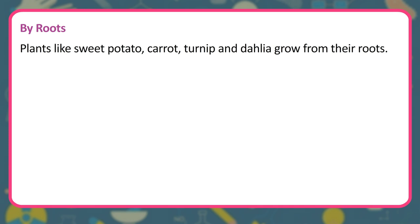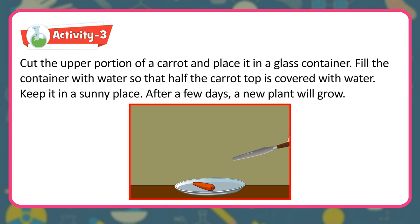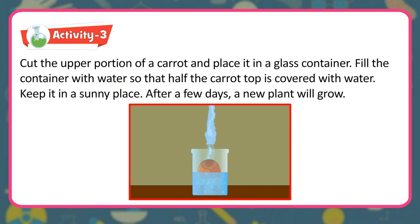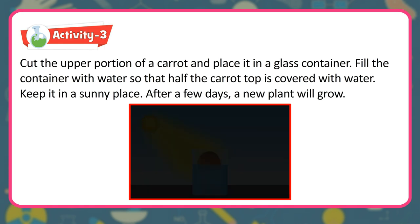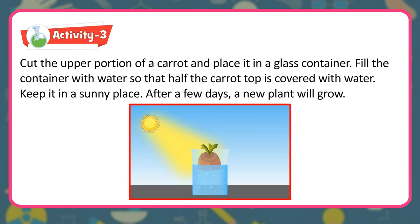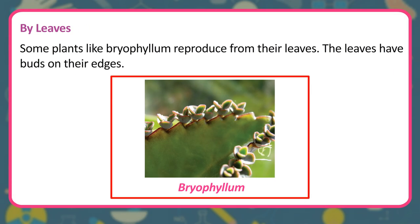By roots: Plants like sweet potato, carrot, turnip and dahlia grow from their roots. Activity: Cut the upper portion of a carrot and place it in a glass container. Fill the container with water so that half the carrot top is covered with water. Keep it in a sunny place — after a few days, a new plant will grow. By leaves: Some plants like bryophyllum reproduce from their leaves. The leaves have buds on their edges.